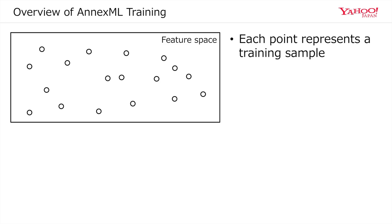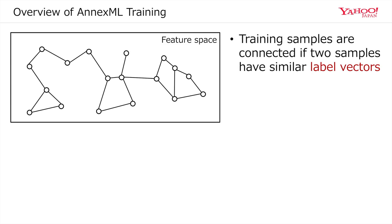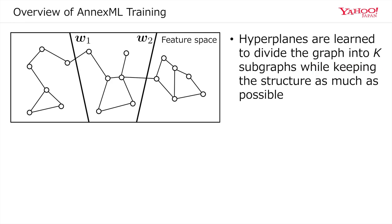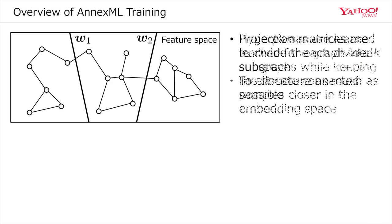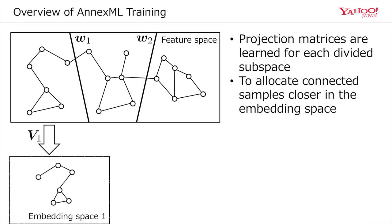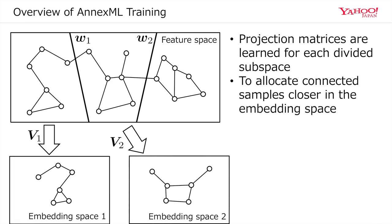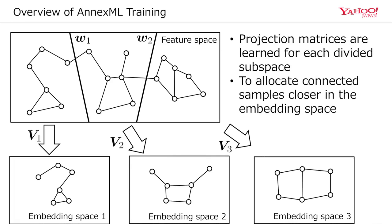Each point in the space represents a training sample. First, training samples are connected if two samples have similar label vectors. Then hyperplanes are learned to divide the graph into k subgraphs. Projection matrices are then learned for each divided subspace.